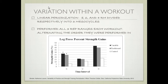The next question is: what about variation within a workout? There's a good study by Stretter. They had linear periodization with eight, six, and four RMs divided into three mesocycles respectively. Another group performed all three rep ranges every workout, alternating the order each time. Looking at strength gains on the leg press by the third time point, the variable and traditional groups gained the same amount of strength. So varying it within a workout doesn't seem to be any better than varying it from mesocycle to mesocycle.